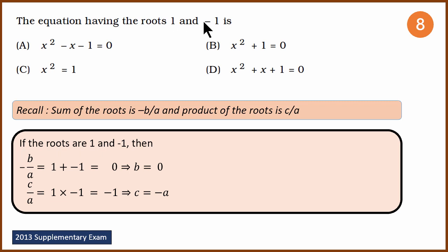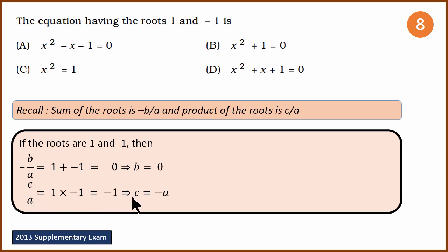What is the sum of the roots here? Adding 1 and minus 1 gives 0. The product of the roots is 1 multiplied by minus 1, which is minus 1. Substituting: sum equals minus b by a equals 0, so b must be 0. Product equals c by a equals minus 1, which means c must equal minus a. So we need b equals 0 and c equals minus a.